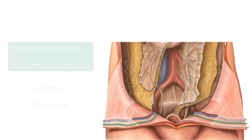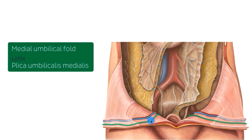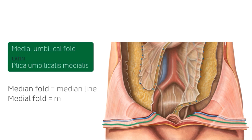Another ridge of the parietal peritoneum is the medial umbilical fold. This is actually a paired structure and there's one found on either side of the body. These folds have a very similar name to the one we just discussed, so it's very easy to get them mixed up. A good way to remember is that the median umbilical fold is closer to the median line of the body, whereas the medial umbilical folds have an L in their name so are located more laterally. These folds are the remnants of the fetal umbilical arteries and can be used as a landmark during laparoscopic surgery for inguinal hernia repairs.